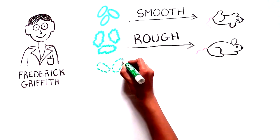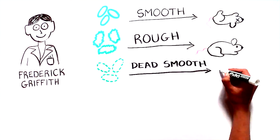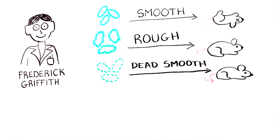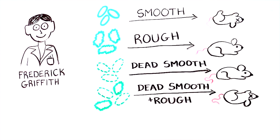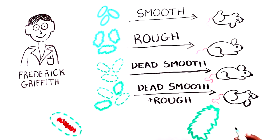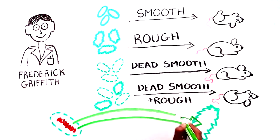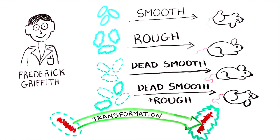To his surprise, if he first killed the smooth bacteria, these dead bacteria did not kill the mice. But if he injected a mixture of dead smooth bacteria and live rough bacteria, the mice died. This meant that, amazingly, something from the smooth strain was transferred to and permanently inherited by the rough strain, a process he called transformation. And this caused the rough bacteria to become deadly.